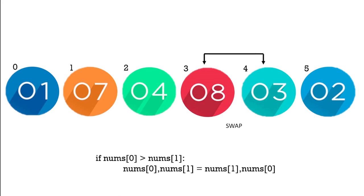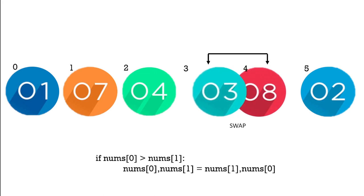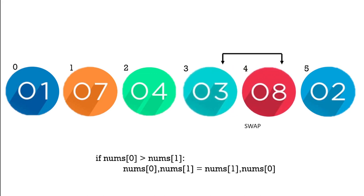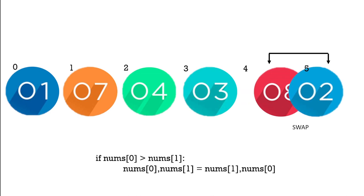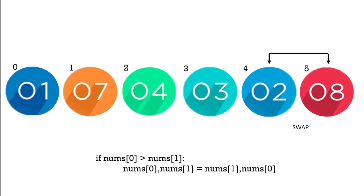We move the next pair, eight and three. We need to swap them. Three and eight. And then finally we look at the last two elements, eight and two. Again we need to swap them. So now we have two and eight.